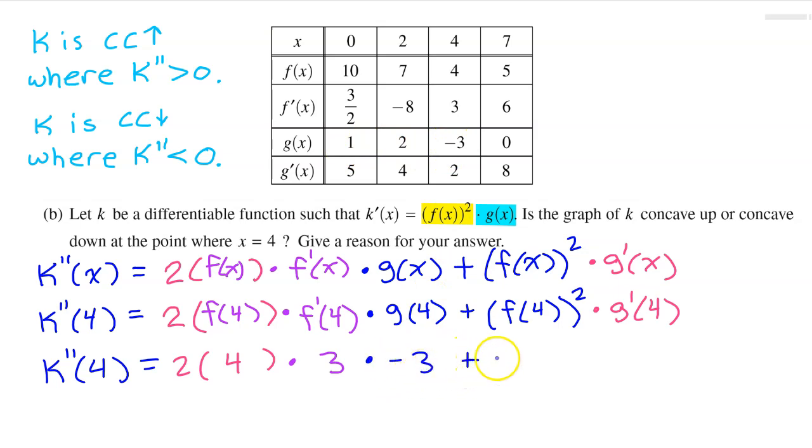And then we have plus f at 4 squared. Let's see, f at 4 is 4. So this is going to be 4 squared. I think I'm going to just go ahead and put 16 up. So I don't need to do that on a later step.